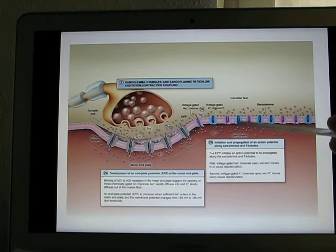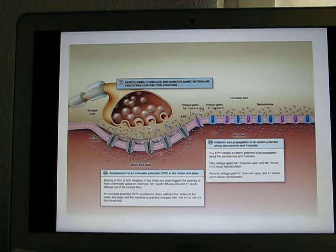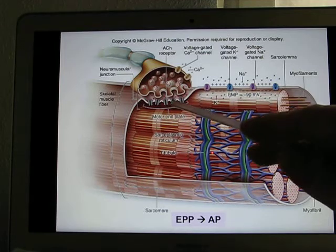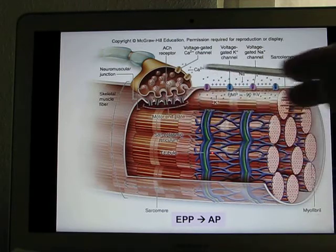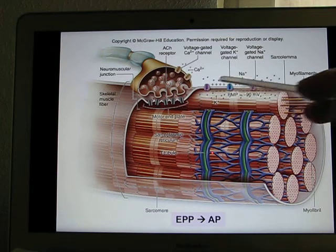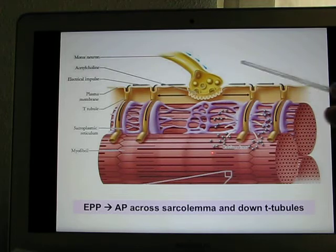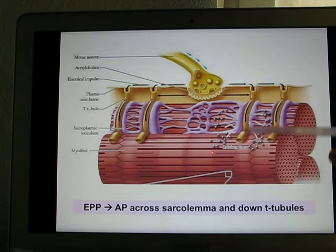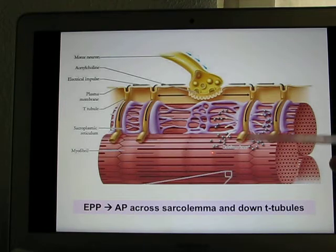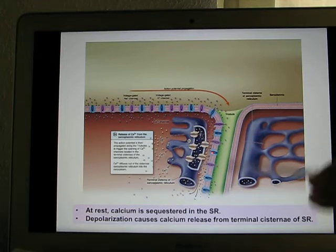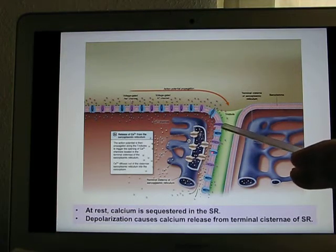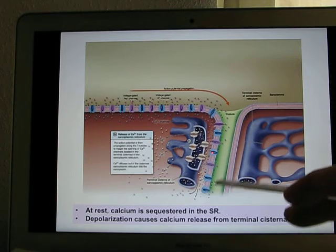The action potential works step by step and keeps propagating. The signal starts from the motor end plate, travels through the cell membrane sarcolemma because of the voltage-gated sodium and potassium channels, and then goes into the T-tubule. The T-tubule is the perpendicular structure to all the muscle fibers, and it can transfer the action potential to every muscle fiber. The T-tubule also has voltage-gated sodium and potassium channels, so it keeps sending the signal through.